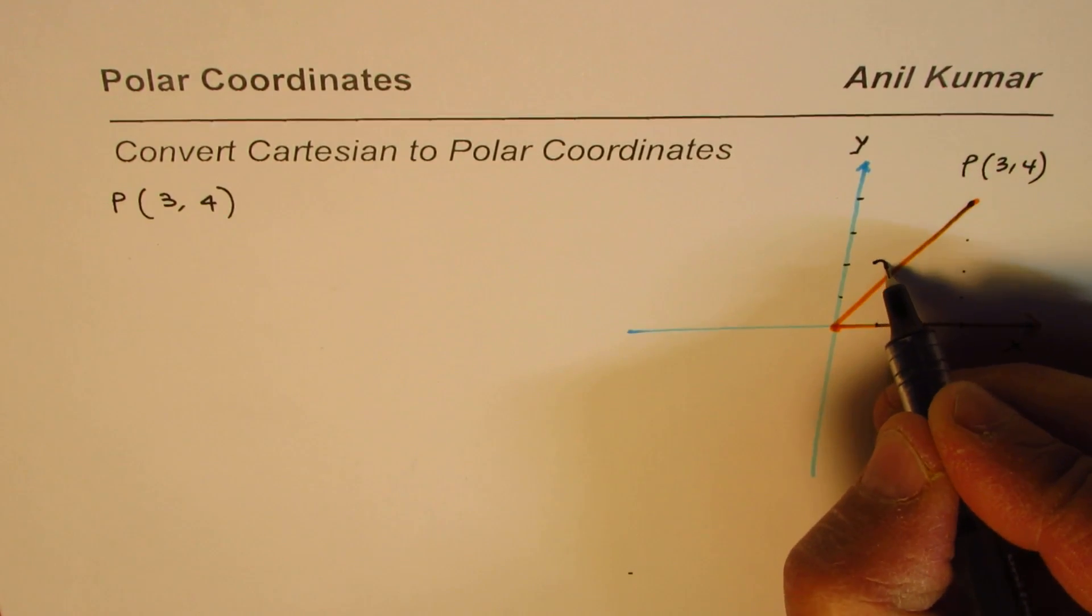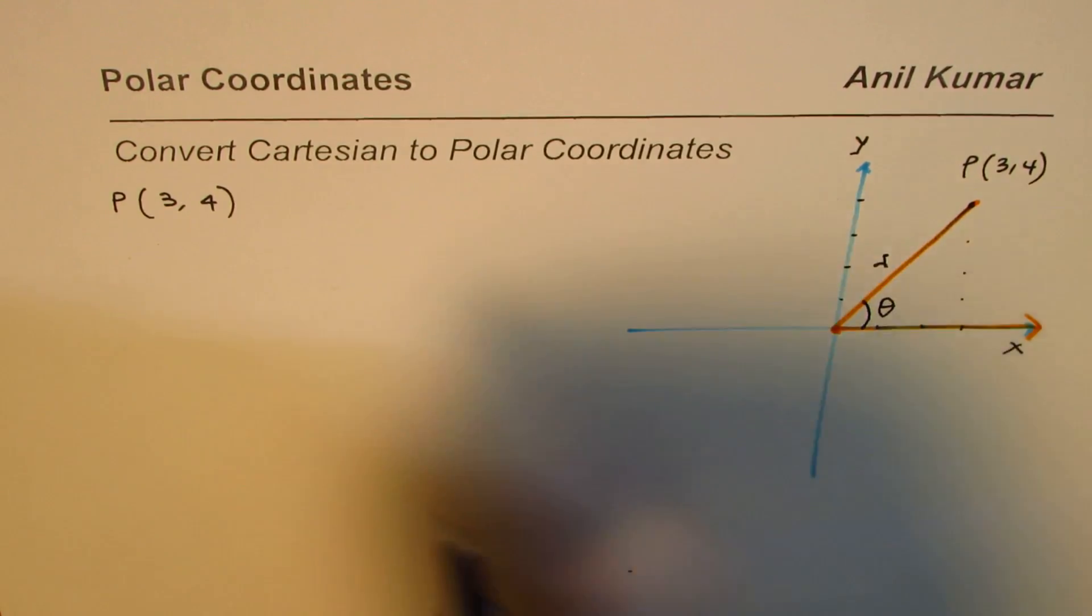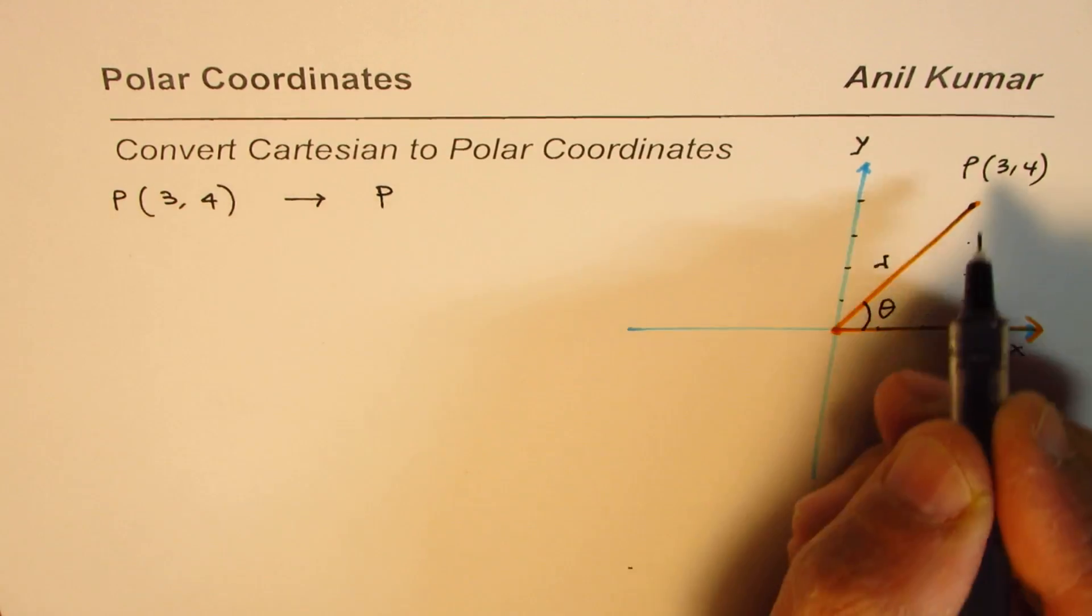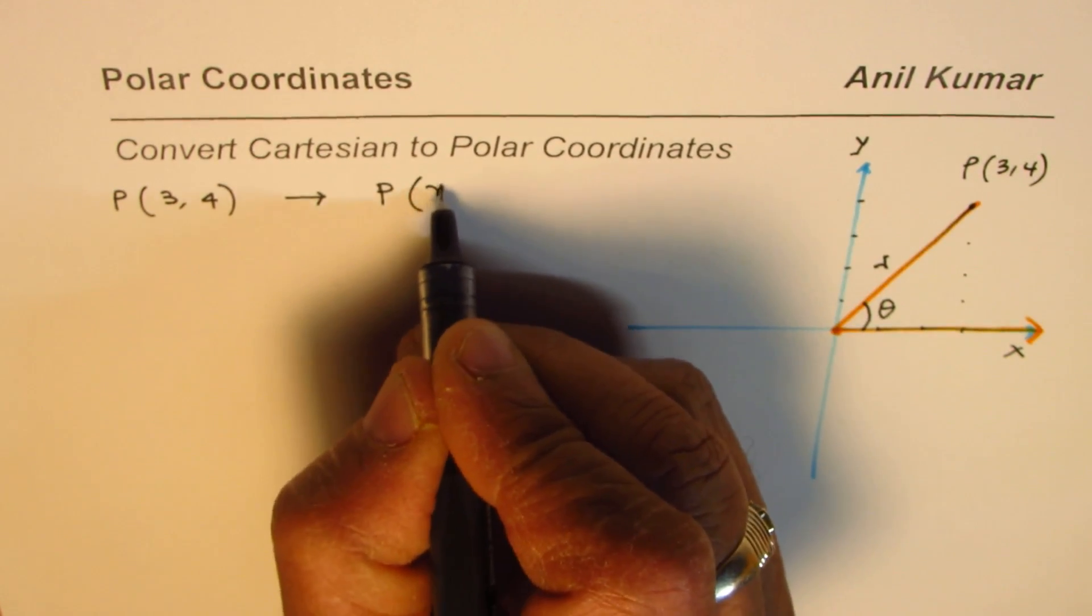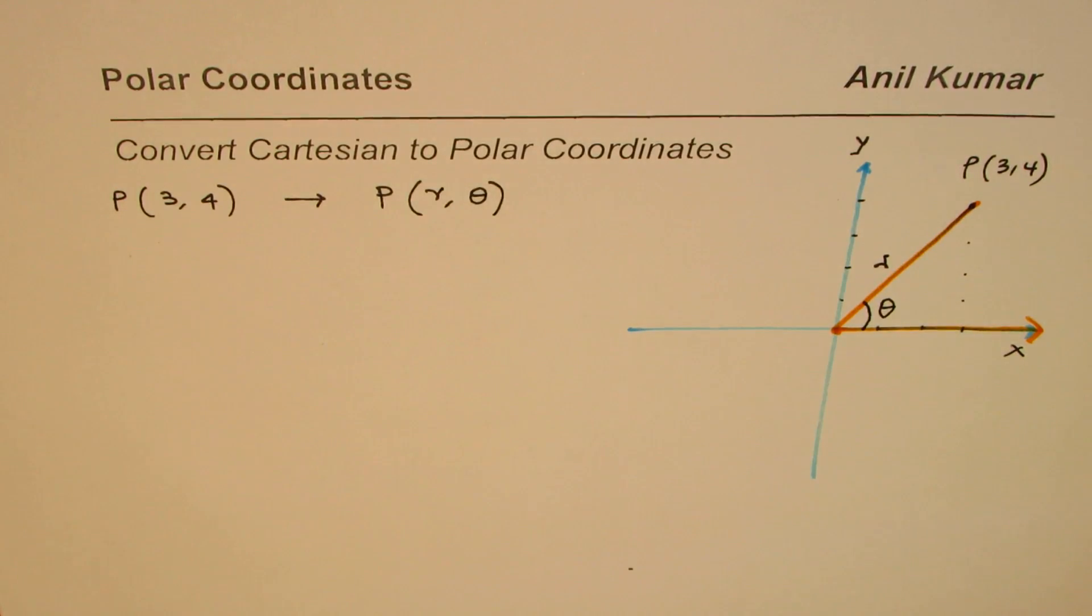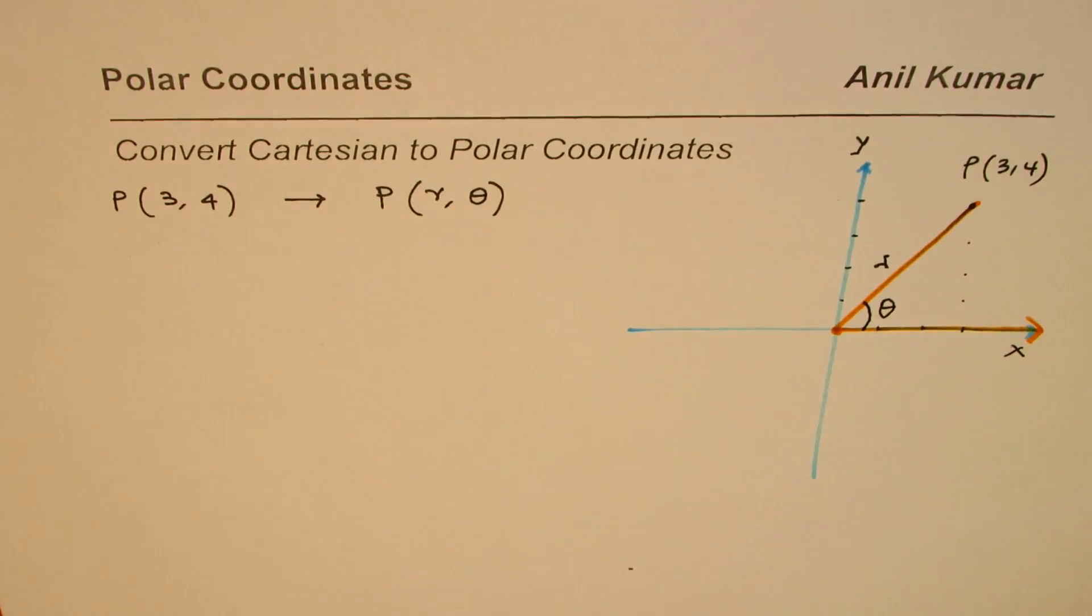Where this value is r for us and this angle is theta for us. So we converted this to another point P, which is actually the same point, written as r, theta. Well, now the question is, what is the value of r and what is the value of theta?